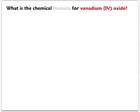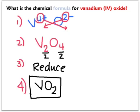Give the cross, drop, and reduce method a try for vanadium four oxide. Vanadium has a charge of plus four. Oxygen has a negative two. When I cross and drop them down, I get V2O4. Both of those numbers can be divided by two, so reducing gives VO2 as the chemical formula for vanadium four oxide.